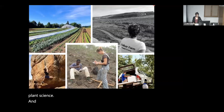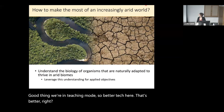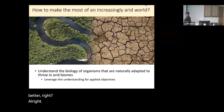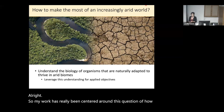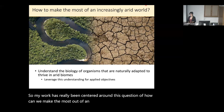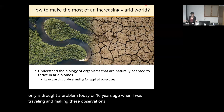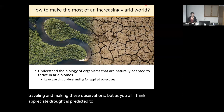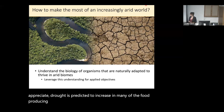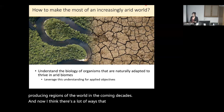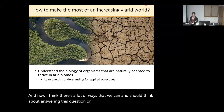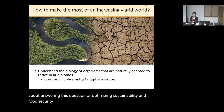My work has really been centered around this question: how can we make the most out of an increasingly arid world? Not only is drought a problem today, but drought is predicted to increase in many of the food-producing regions of the world in the coming decades. There are a lot of ways that we can and should think about answering this question and optimizing sustainability and food security in an increasingly arid world.